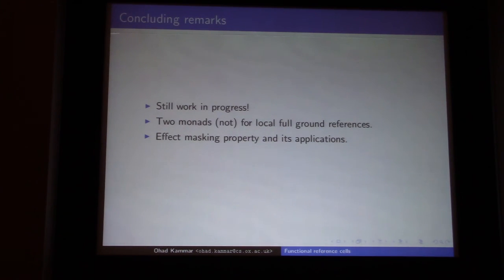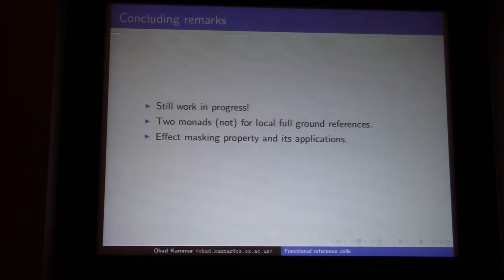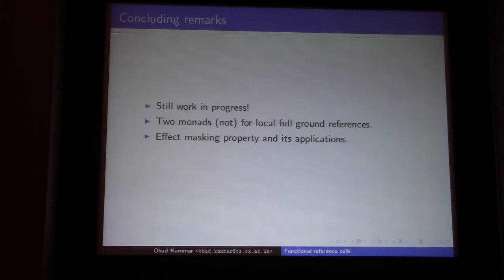That gives you the semantics for RunST. So this is a work in progress — I'm sorry about not spotting the error before. I've given you two monads that are not quite right for full ground references, and I've shown how the effect masking property can be used for RunST. One thing to note: the local ground state monad does validate effect masking, so you could use that to do a ground-state RunST, but I think that's somewhat limited. So we'll finish here. Thanks.